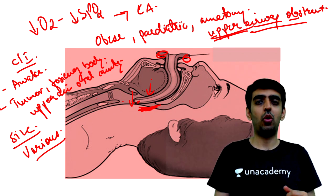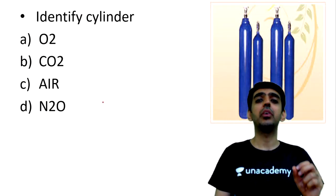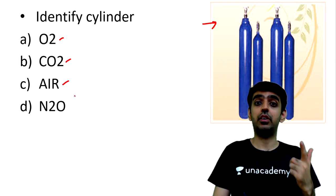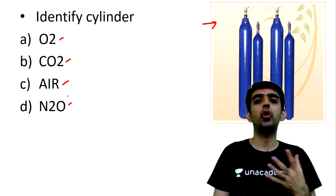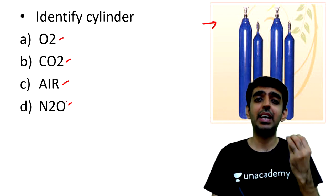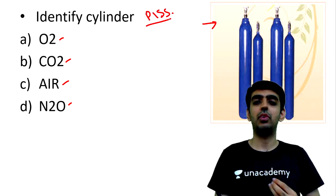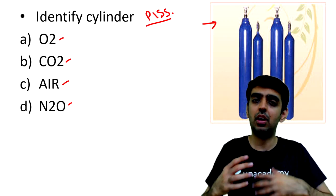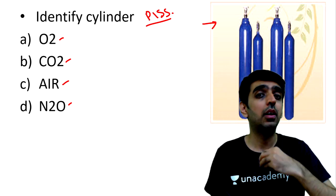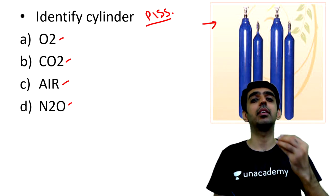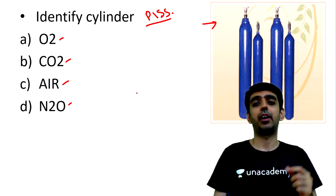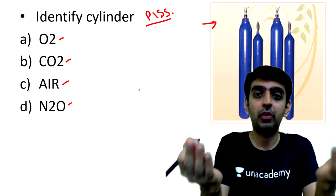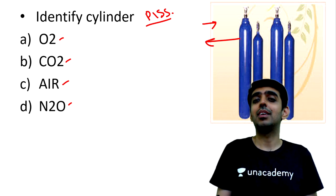Moving to question 2: identify the cylinder shown on screen. Is it oxygen, carbon dioxide, air, or nitrous oxide? To remember cylinder color coding, you can use visual impression or mnemonics. The pin index safety system (PISS) has been discussed in previous sessions and plus courses.